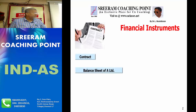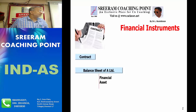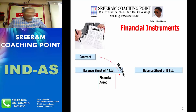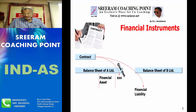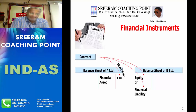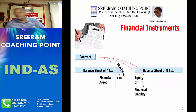A financial instrument is basically a contract which will give rise to a financial asset of one entity, and which will also take into account the financial liability of another entity or equity of another entity. Before we discuss financial instruments further, we should know what is a financial asset, what is a financial liability, and what is equity.